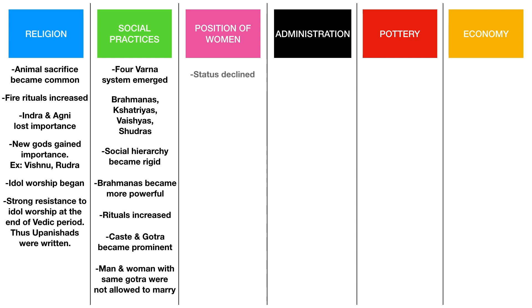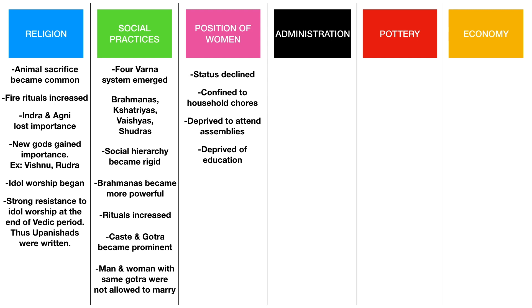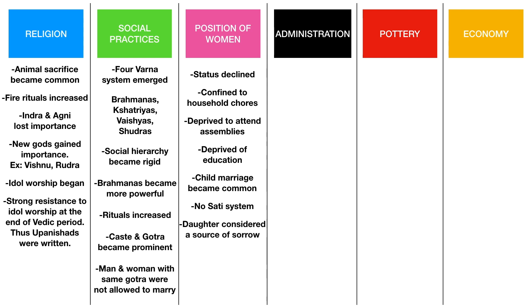Coming to the position of women, the status of women decreased in society — they were confined to household chores, deprived of attending assemblies, and even deprived of education. Child marriages became more common. Comparing the later Vedic phase with the early Vedic phase: in the early phase, women were given good social status and child marriages were not common, whereas in the later phase child marriages became common. However, there was still no Sati system, and a daughter was considered a source of sorrow.